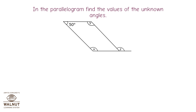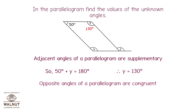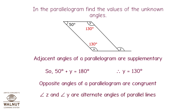In parallelogram ABCD, find the values of the unknown angles. Adjacent angles of a parallelogram are supplementary, so 50° + Y = 180°, giving Y = 130°. Opposite angles of a parallelogram are congruent. Angle Z and angle Y are alternate angles of parallel lines, therefore they are congruent.